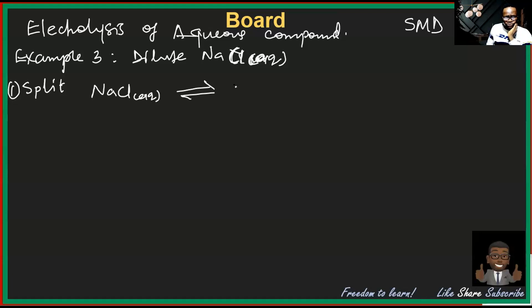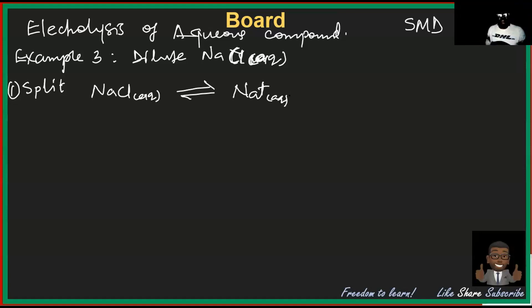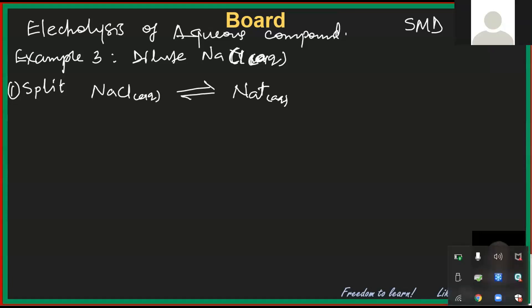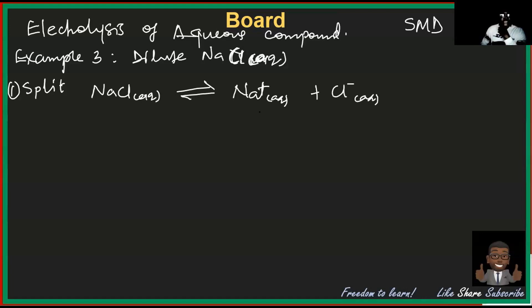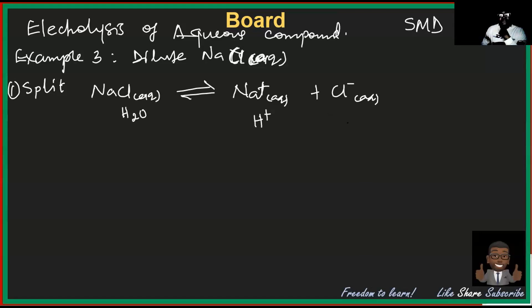So what is sodium chloride going to split into? It splits into sodium ions and chloride ions. And of course water is also present, so you have hydroxide ions and hydrogen ions from the water as well. So basically you have four ions in solution.